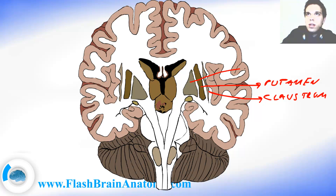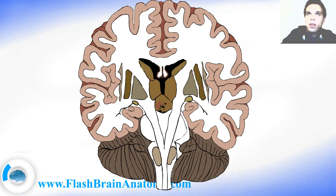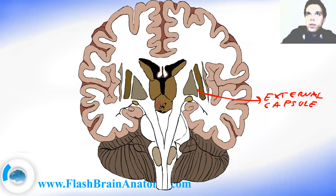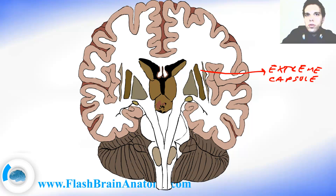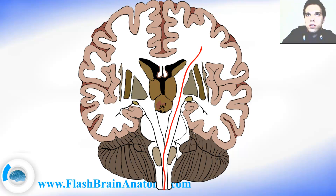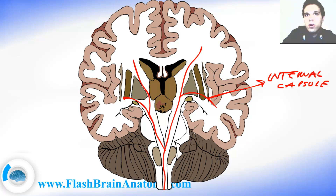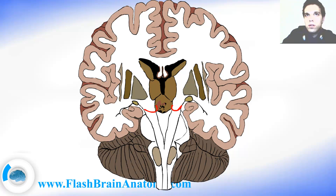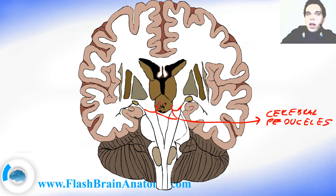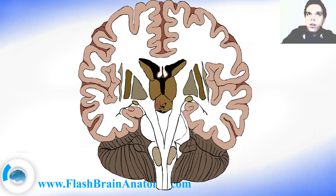And even more medial, we had the pallidum, which can be divided into the medial pallidum and the lateral pallidum. Then we had the external capsule over here, between the putamen and the pallidum. And we also had the extreme capsule over here, between the claustrum and the putamen. We may not forget to write down the internal capsule over here on both sides — that is very important. Then we had these two parts over here called the cerebral peduncles, and right between these two, we had the interpeduncular fossa.